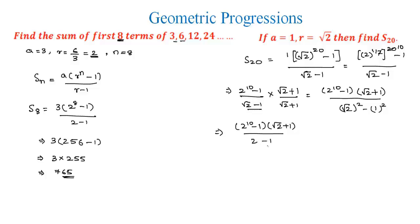Root 2 whole square is 2, so root 2 square minus 1 square would be here 1, so let us ignore it.